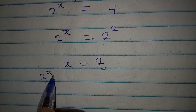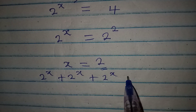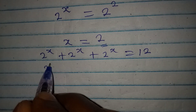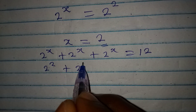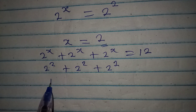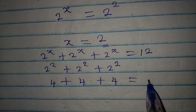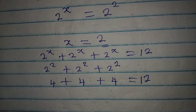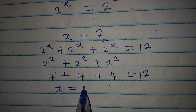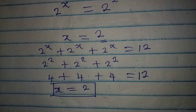Let's verify: putting x = 2 back into the equation gives 2^2 plus 2^2 plus 2^2, which is 4 plus 4 plus 4, giving us 12. This confirms that x equals 2 is correct. Thank you for watching.